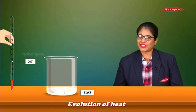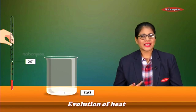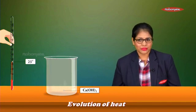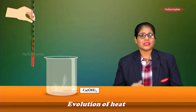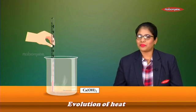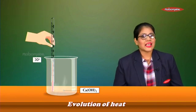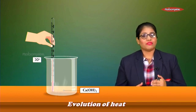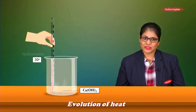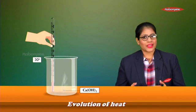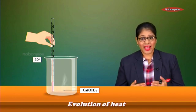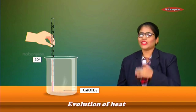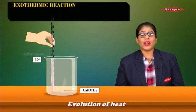Now let's see what happens when I add water to calcium oxide. We can see that the calcium oxide is getting dissolved, meaning some reaction is taking place. Let's take the thermometer and measure the temperature — the temperature has risen from 25 to 30 degrees Celsius. So can I say that the reaction has given out heat energy?